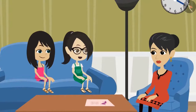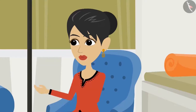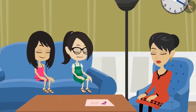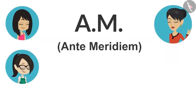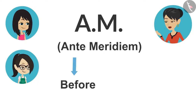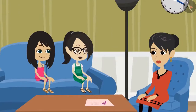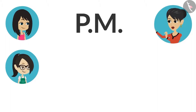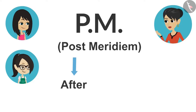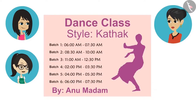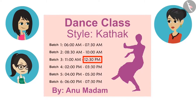Whenever the time has to be mentioned, we have to write it with the information whether it is before noon or afternoon. But what do AM and PM stand for? The full form of AM is ante meridiem — ante in Latin means before, and meridiem means noon, so ante meridiem means before noon. That means the full form of PM would mean afternoon. Yes, the full form of PM is post meridiem — post means after, and meridiem means noon, so PM means afternoon. This means their batch 3 starts before noon at 11 o'clock and ends at 30 minutes past 12 in the afternoon. Absolutely right!